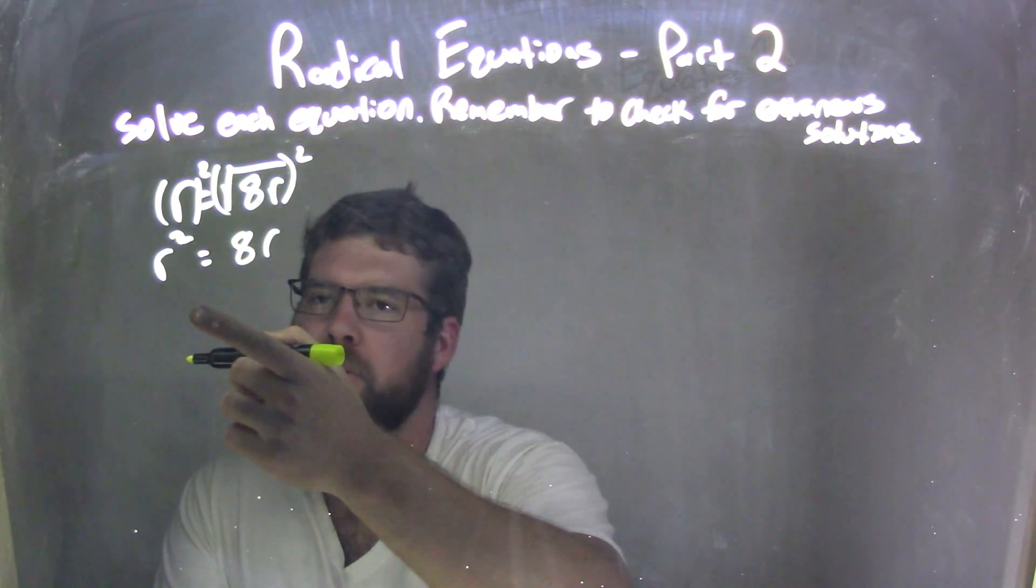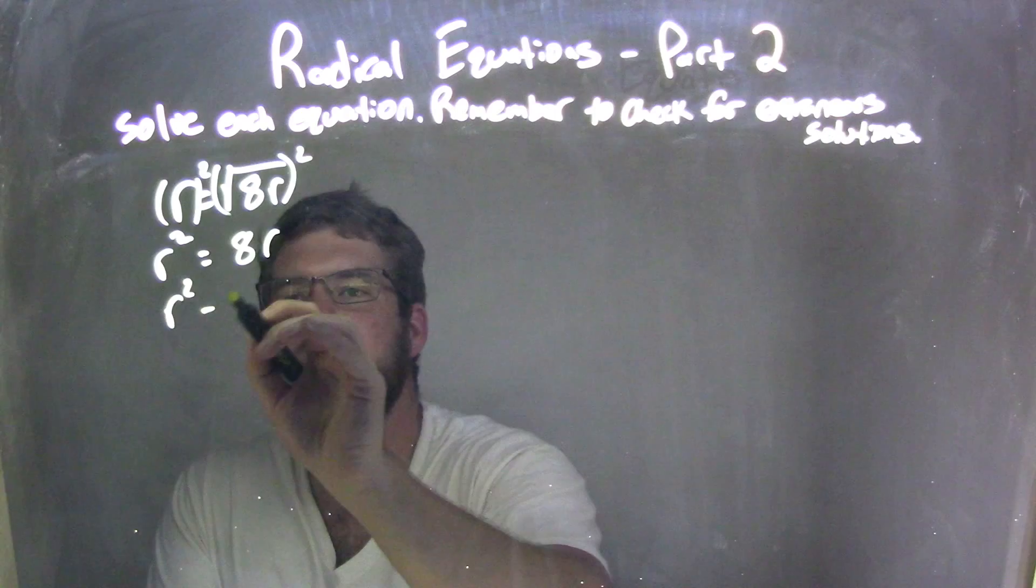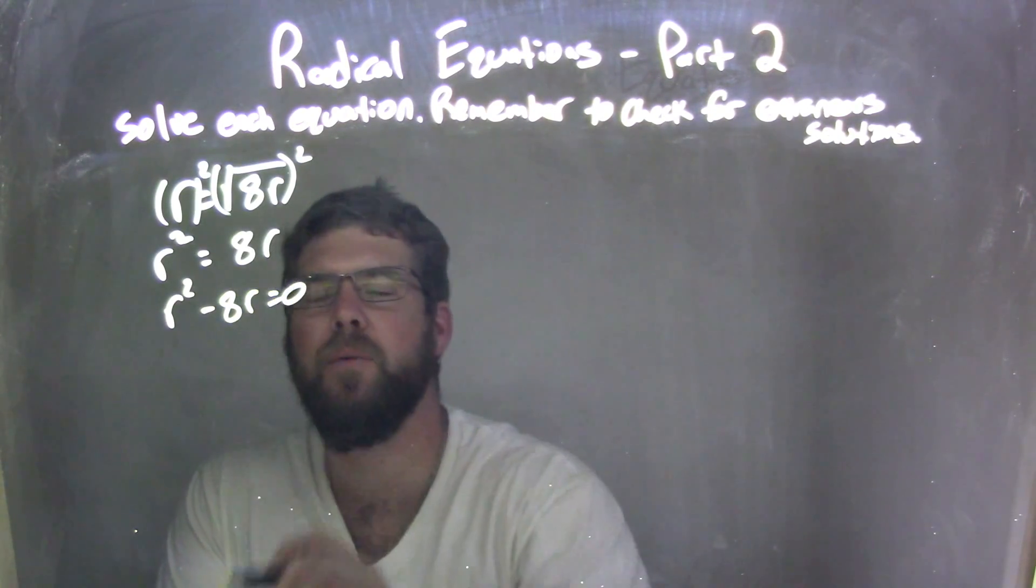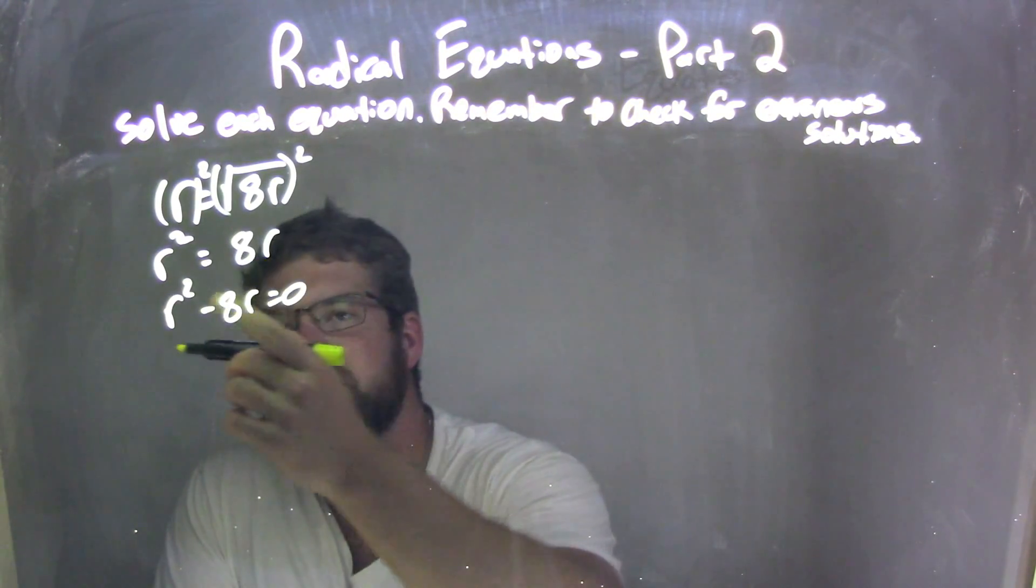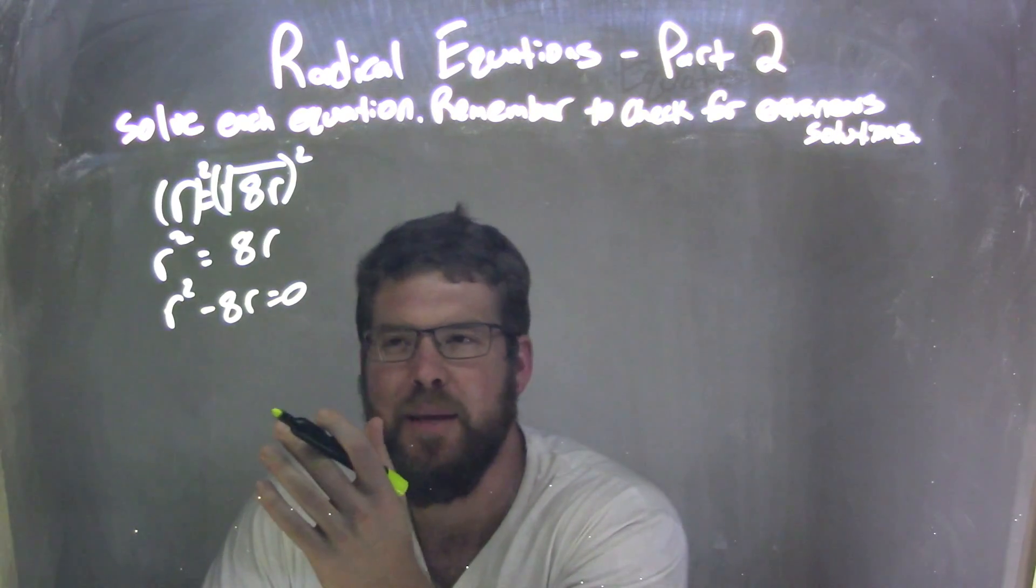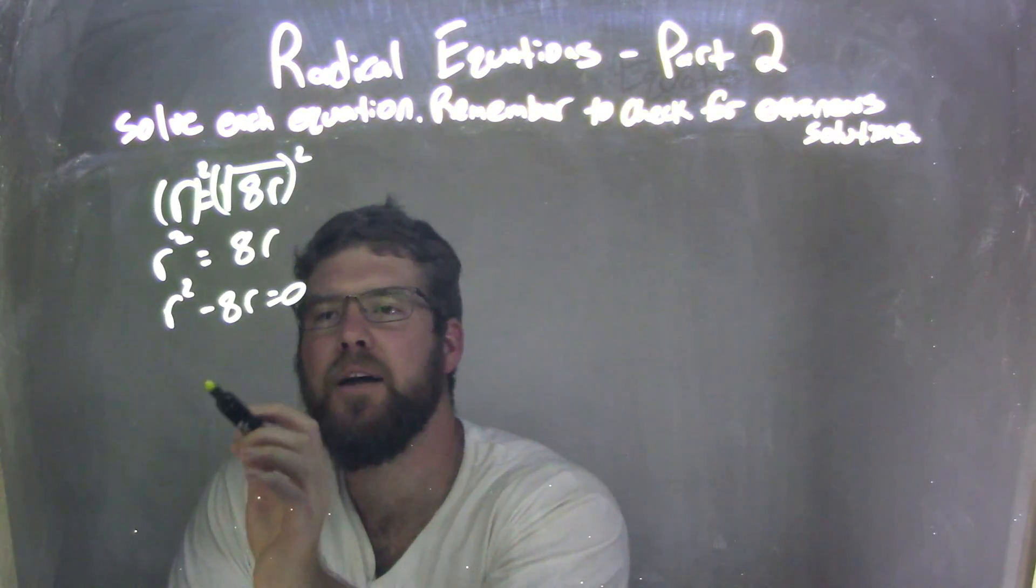I'm going to subtract 8r from both sides. So r squared minus 8r equals 0. And make sure you're subtracting 8r. Don't divide, it doesn't really eliminate anything here. Subtract 8r from both sides.